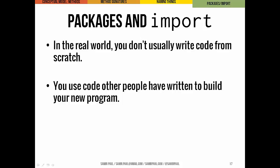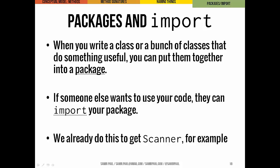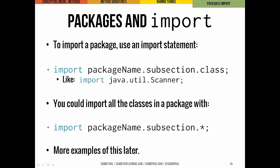In the real world you don't write all your code from scratch — you use stuff other people have written. So we need to know how to import classes or code that others have written. We've already done this a bit; you've seen we have to import the Scanner class. When a bunch of related classes are useful together, we put them in a package and import that package. Importing is simple: use the import keyword, then the package name, then any subsection, then the class name. If you want to import everything inside a subsection, use the asterisk to indicate 'give me everything in there.'